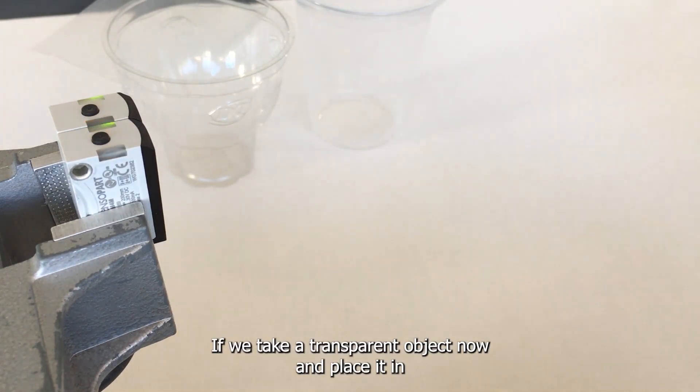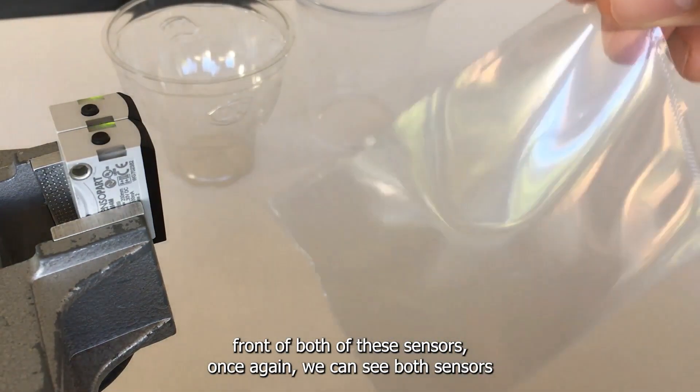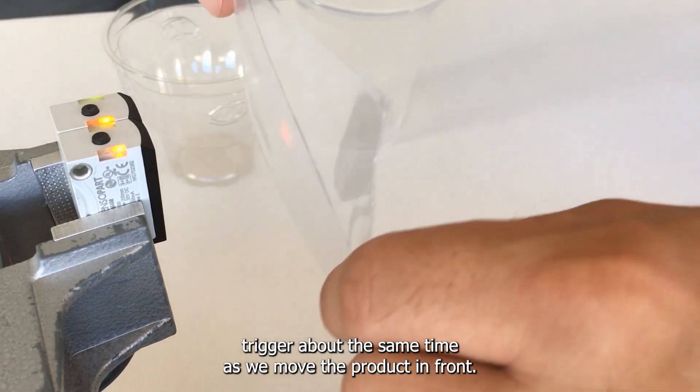If we take a transparent object now and place it in front of both of these sensors, once again we can see both sensors trigger about the same time as we move the product in front.